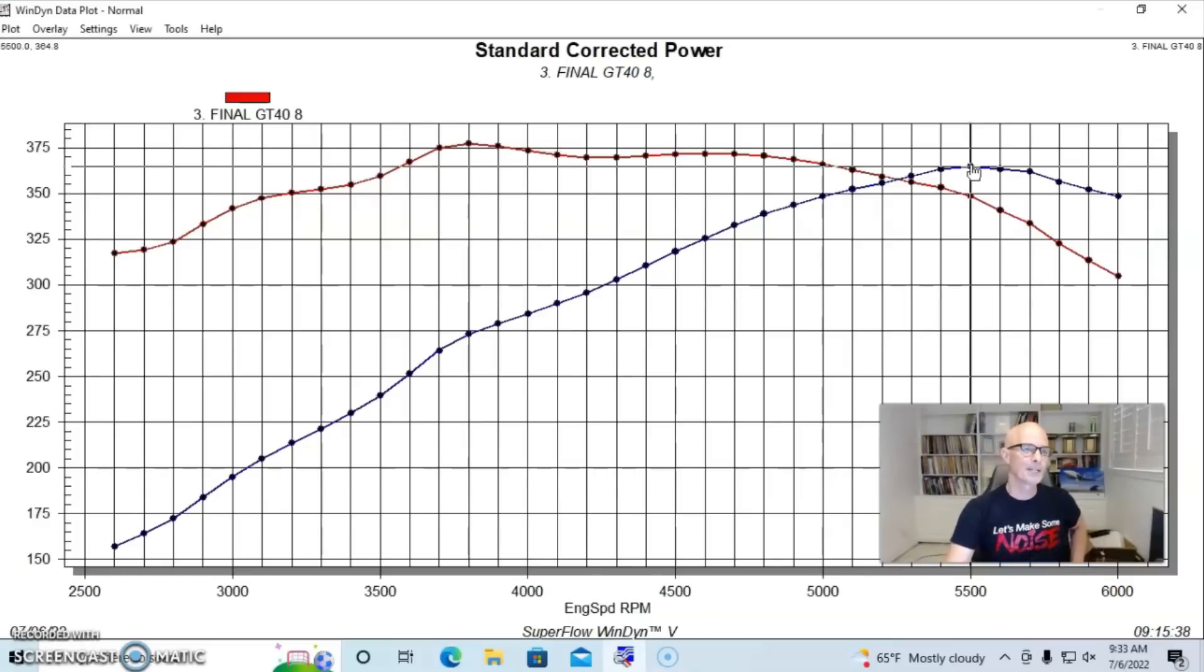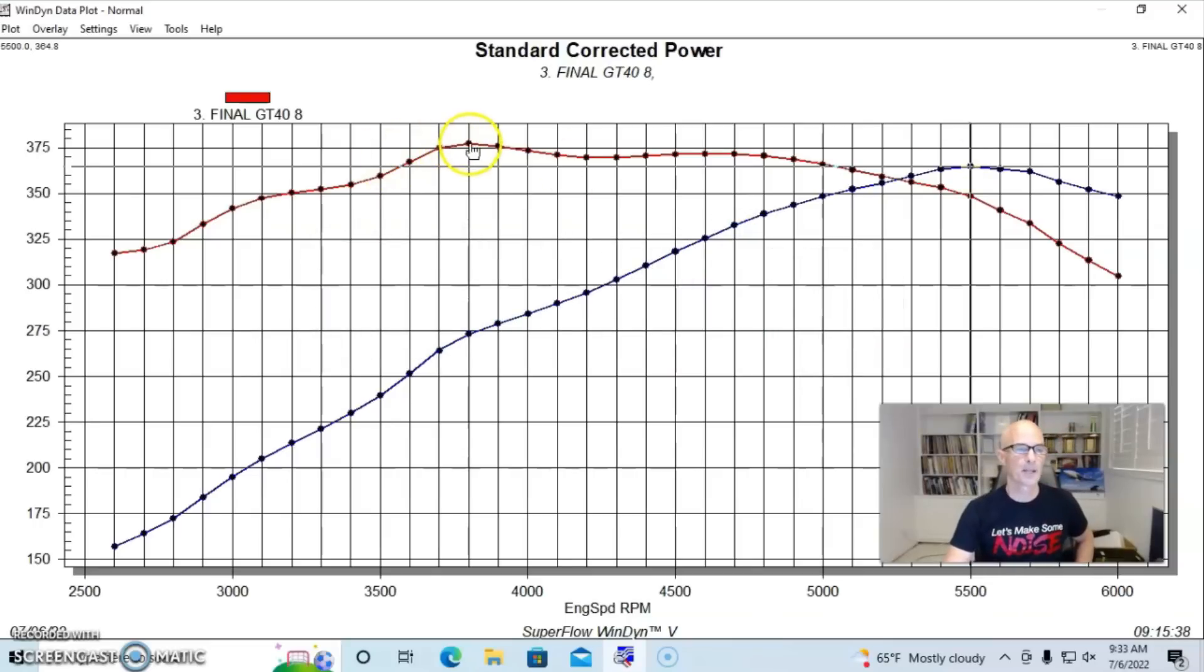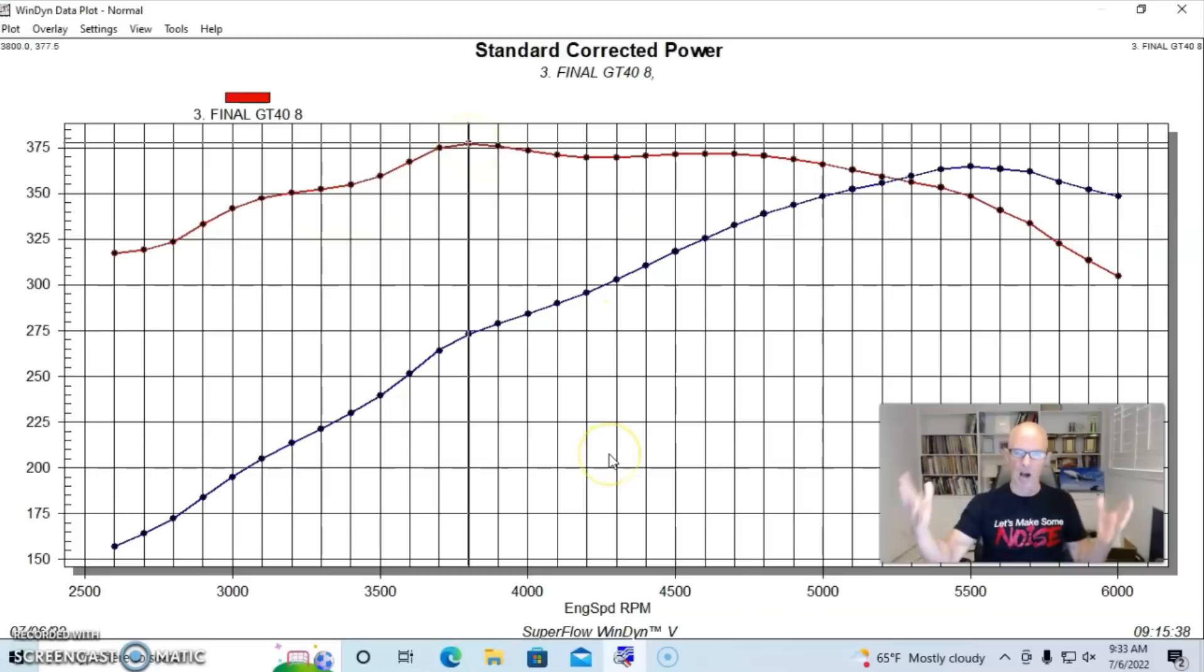our combination produced 364.8 horsepower and 377.5 foot-pounds of torque. You can see long runner GT40 style intake manifold, lots of torque production, and we made peak power out at 5,500 RPM.